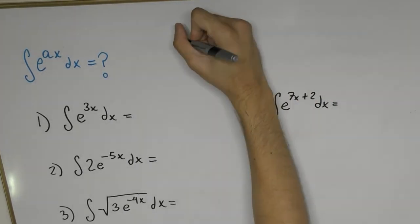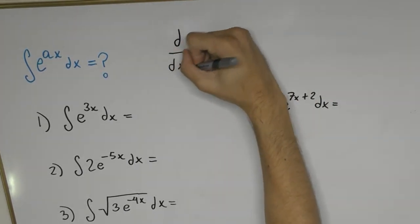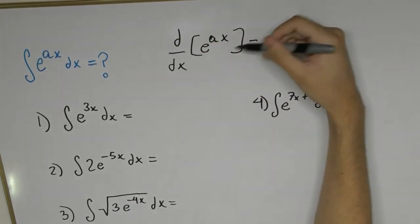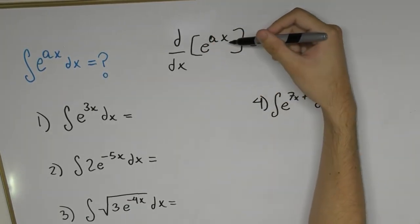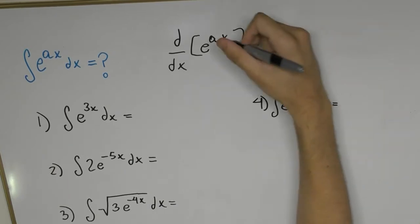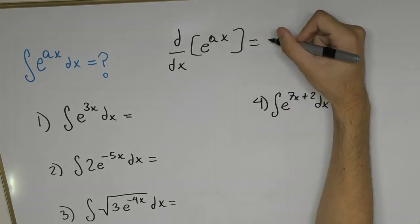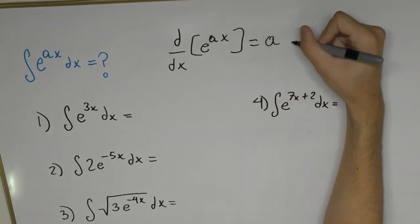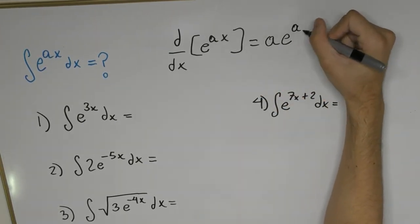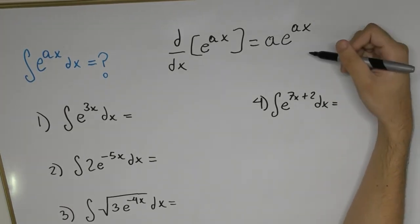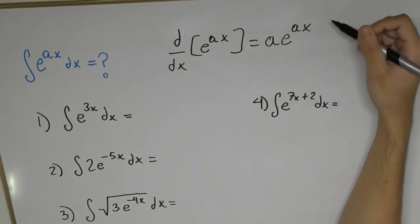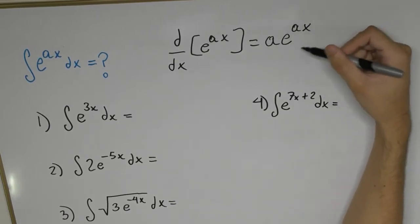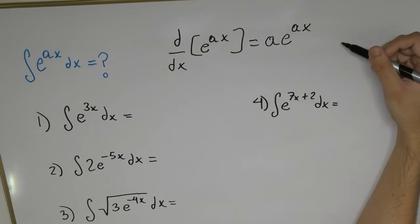Starting with the derivative of e to the power of ax, we differentiate by bringing the a to the front — we differentiate the power of that function and then multiply by the same function again. So for any exponential function, we differentiate the power, that comes to the front, and the rest of the expression remains the same.